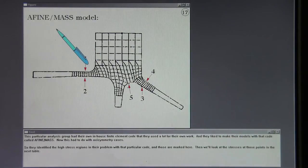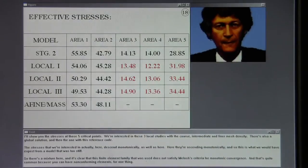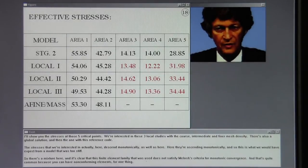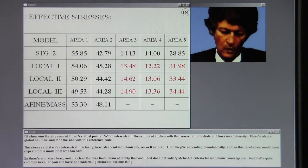This particular analysis group had their own in-house finite element code that they used a lot for their own work. And they like to make their models with that code called AFINE/MASS. Now this had to do with axisymmetry cases. So they identified the high stress regions in their problem with that particular code, and those are marked here. Then we'll look at the stresses at those points in the next table.